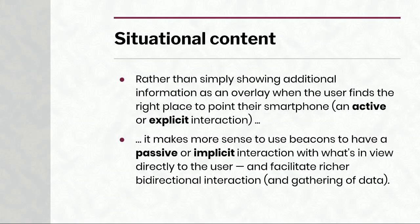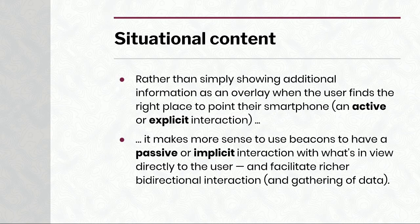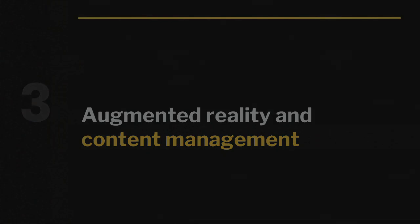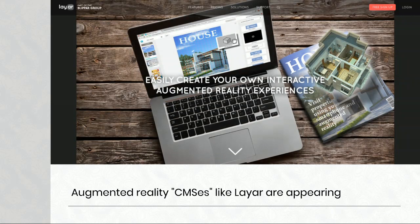This idea of locational or situational content that combines beacons and augmented reality is increasingly important — there's a new intersection between what beacons can do and what augmented reality can do. Rather than simply showing additional information when you walk to a display and hold up your phone — which requires an explicit interaction — with beacons you can have a more passive, implicit interaction that provides much richer engagement with the user and gathering of data. This means content management has to evolve in a wholesale fashion. We're seeing new AR-focused CMSs like Layar emerging.